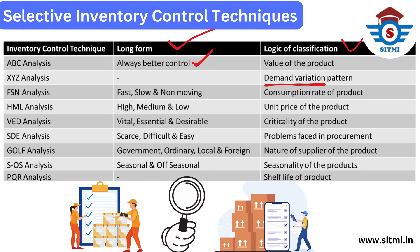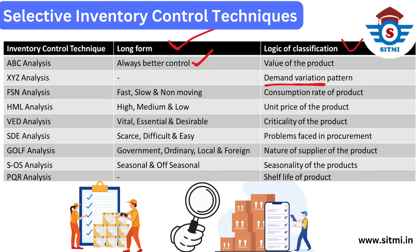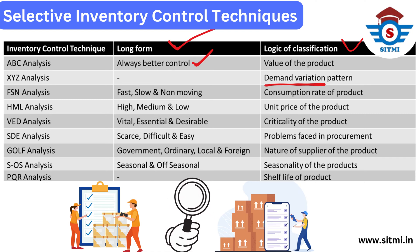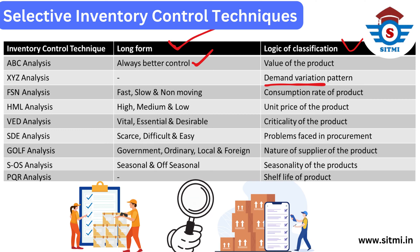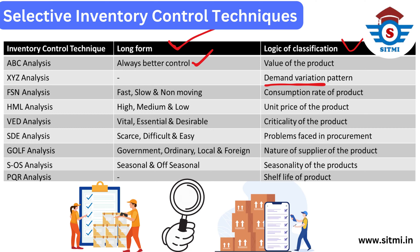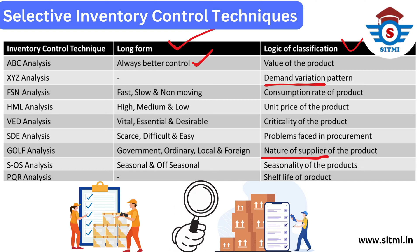The sixth inventory control technique is SDE, which stands for Scarce, Difficult, and Easy. This is based on the logic of the procurement difficulty — specifically, the problems faced by the procurement department in obtaining these products in the organization. The seventh technique is GOLF analysis. GOLF stands for Government, Ordinary, Local, and Foreign suppliers, and the logic used is based on the nature of the supplier of the particular product.